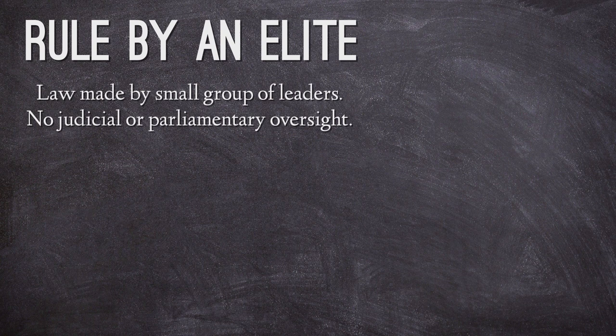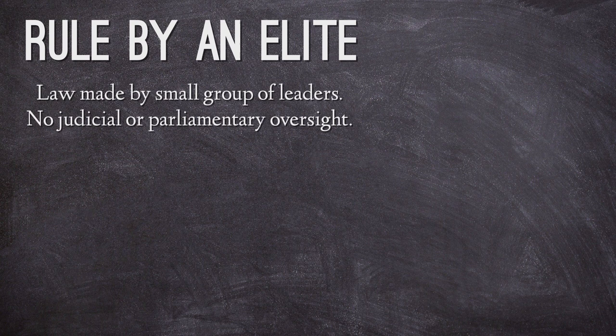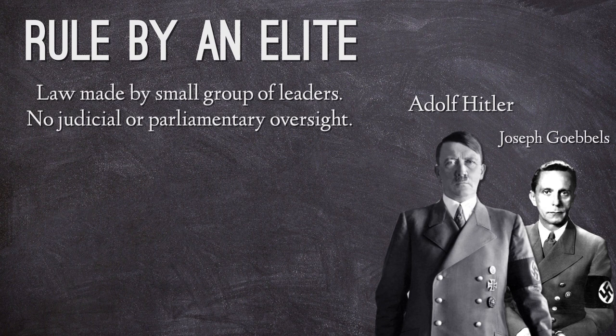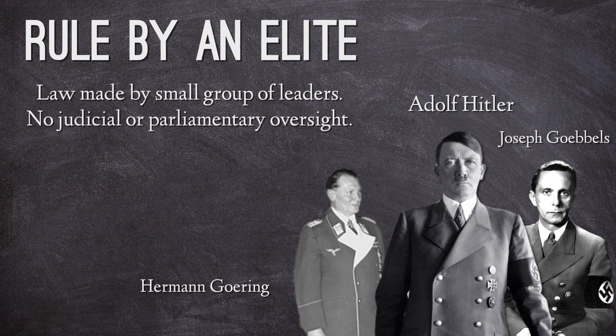The first technique of authoritarianism we're going to talk about is rule by an elite. What we mean by rule by an elite is that decisions and laws are made not by elected representatives chosen by the people in elections, but by a small group — and sometimes one individual — making laws and decisions for the whole country. In Nazi Germany, at the very top was Adolf Hitler, supported by advisors such as Minister of Propaganda Joseph Goebbels and Hitler's right-hand man Hermann Goering, and they had the ability to make decisions without any checks on their power.